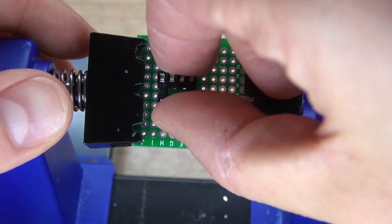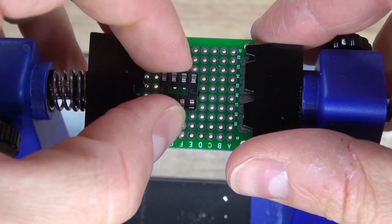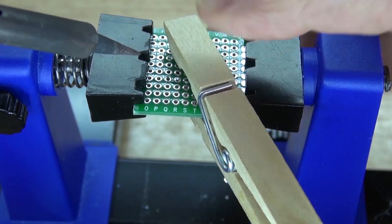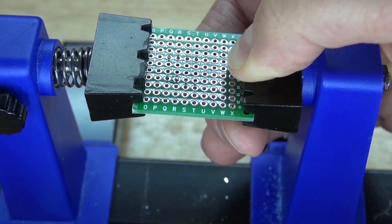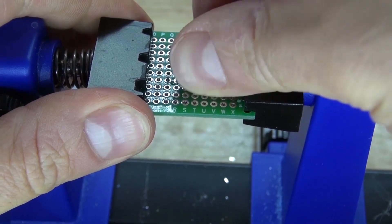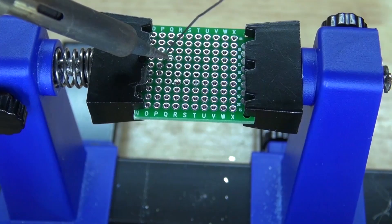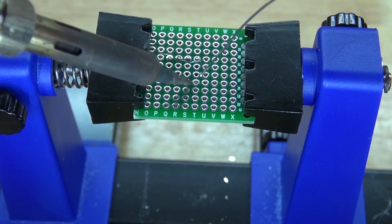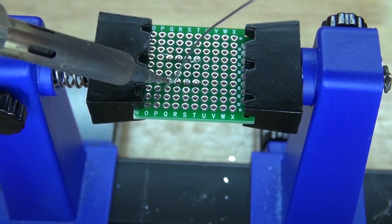First you're going to need to take your IC socket holder and place it in the center of the perf board. Solder one pin into place, hold the IC socket holder flat and then remelt the solder, that way everything is flushed to the board. And now solder the rest of the pins into place. And it should look just like that.